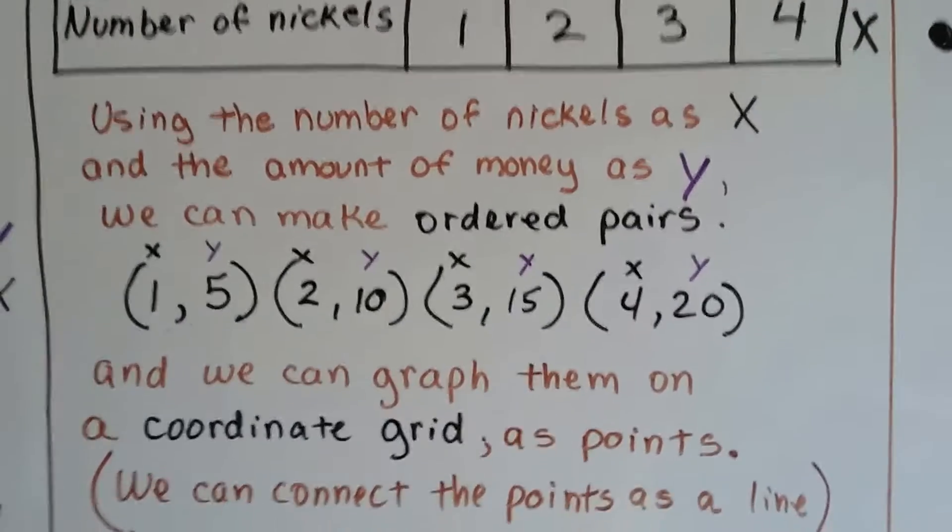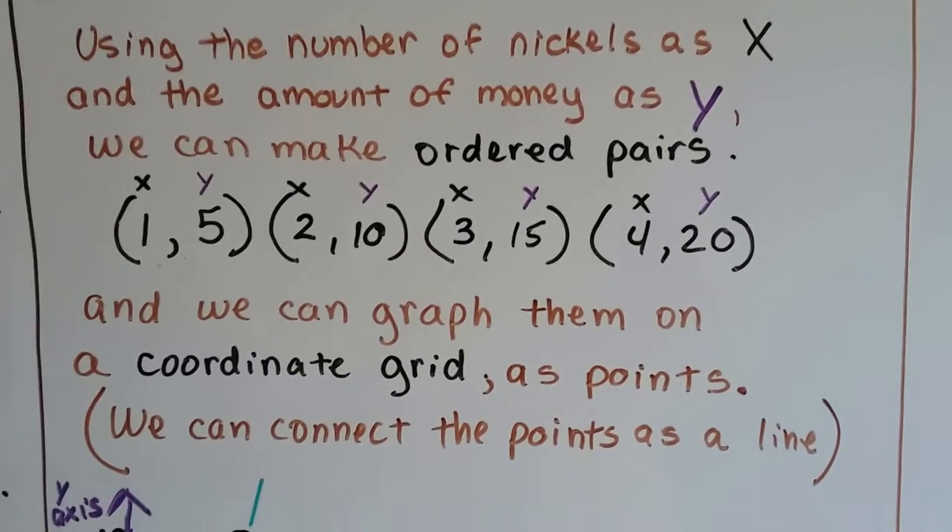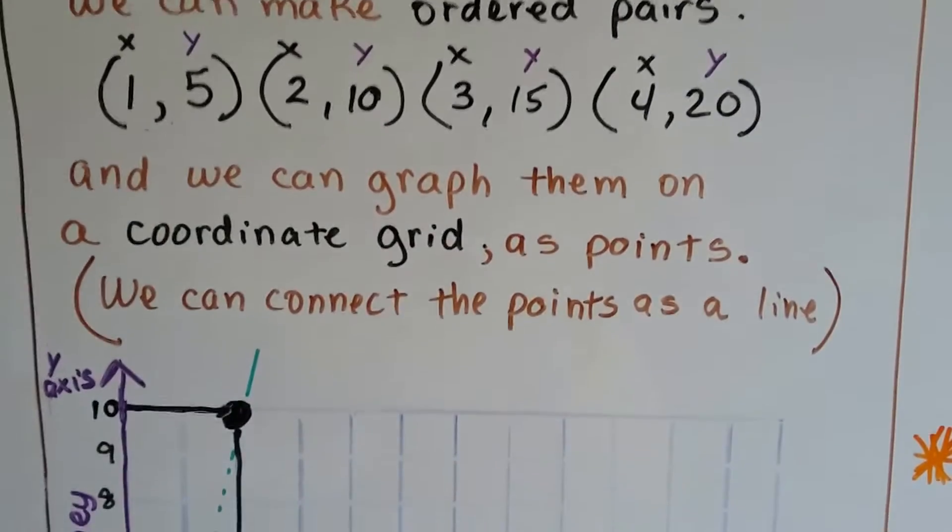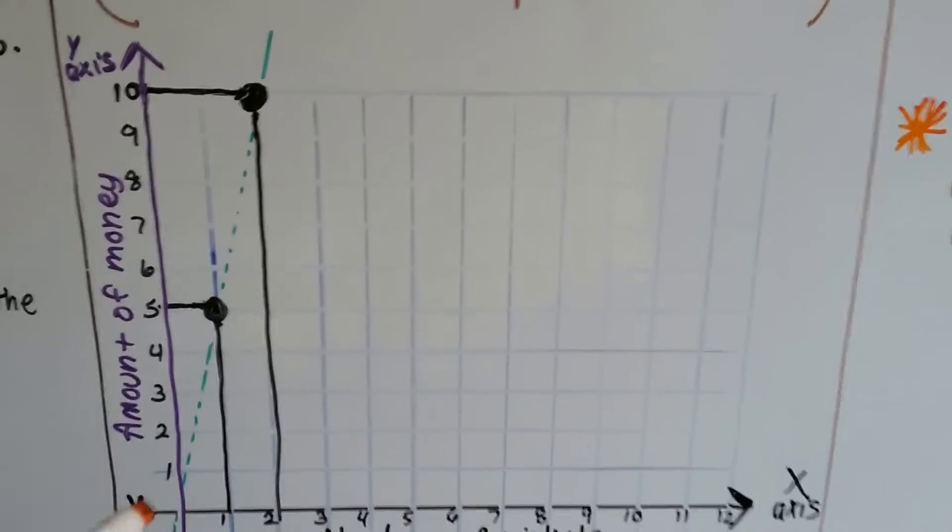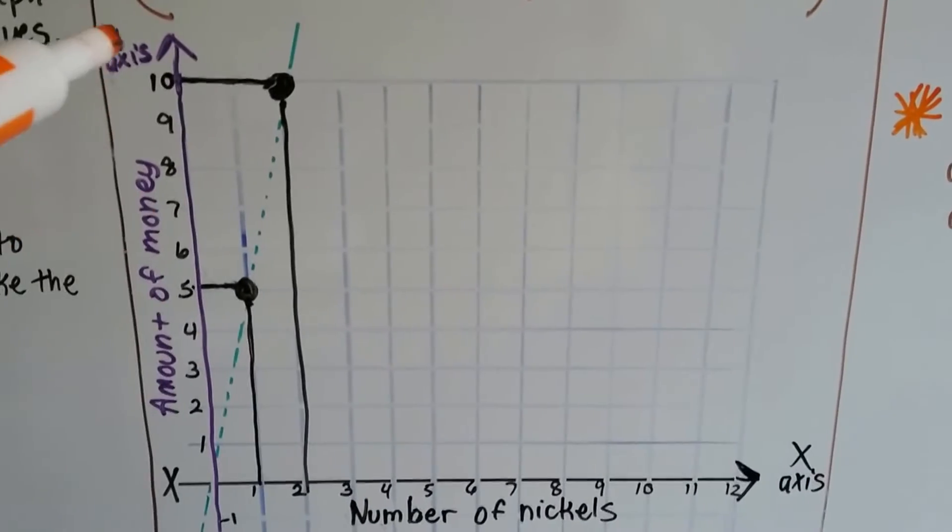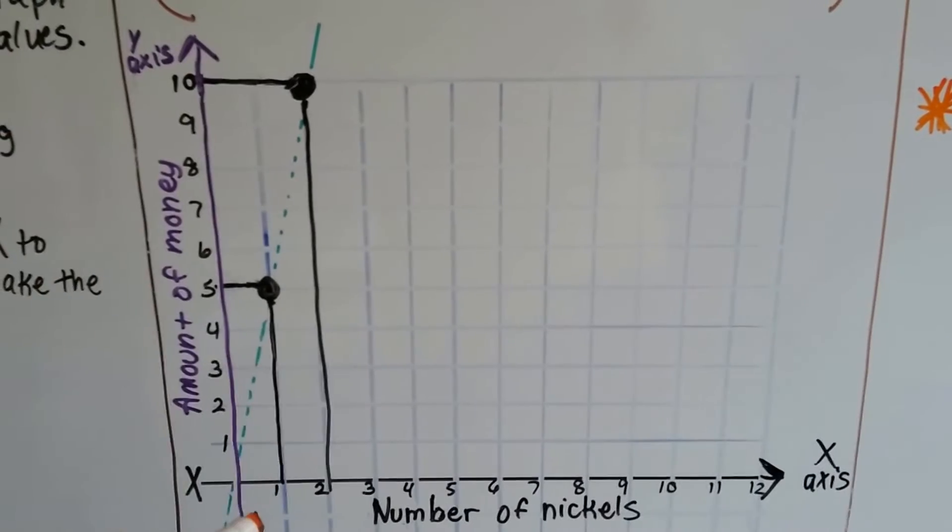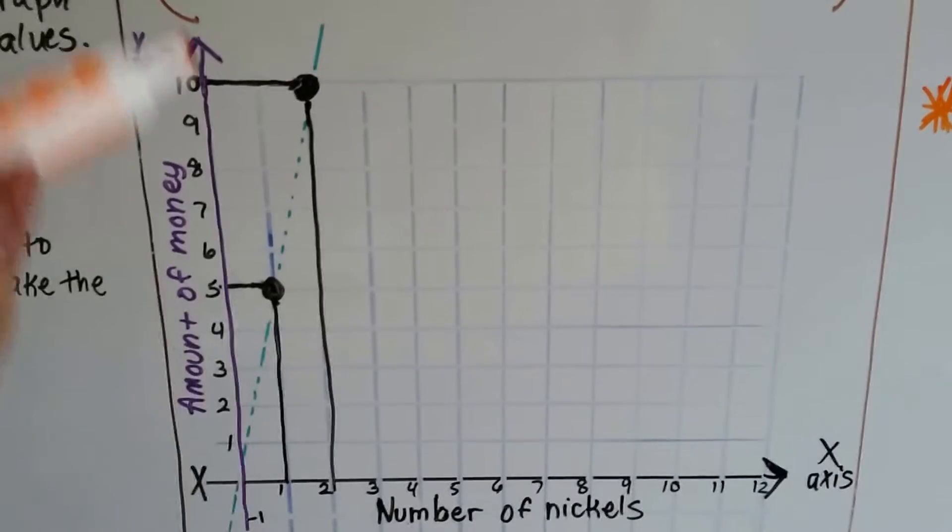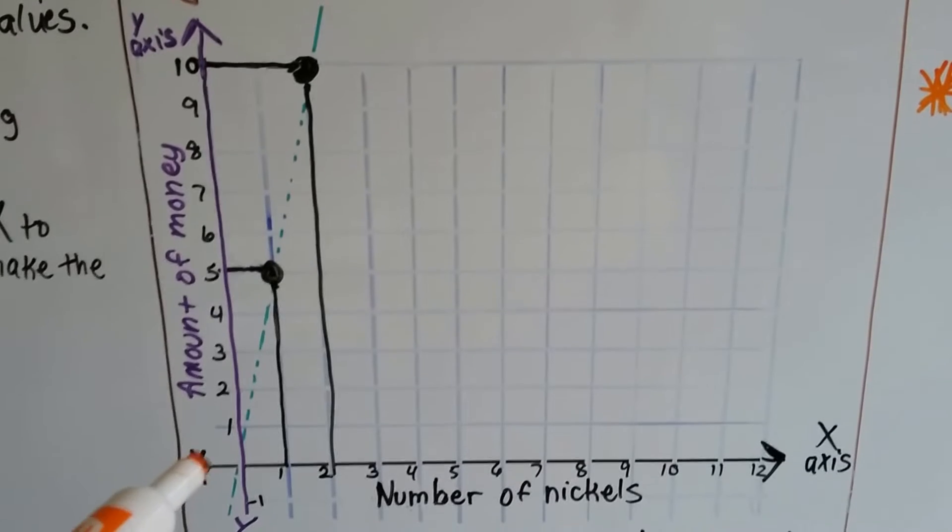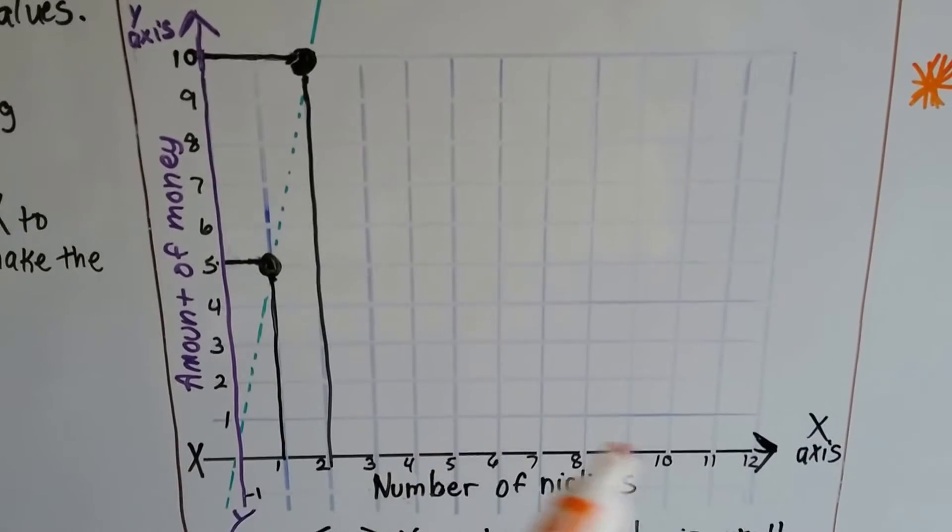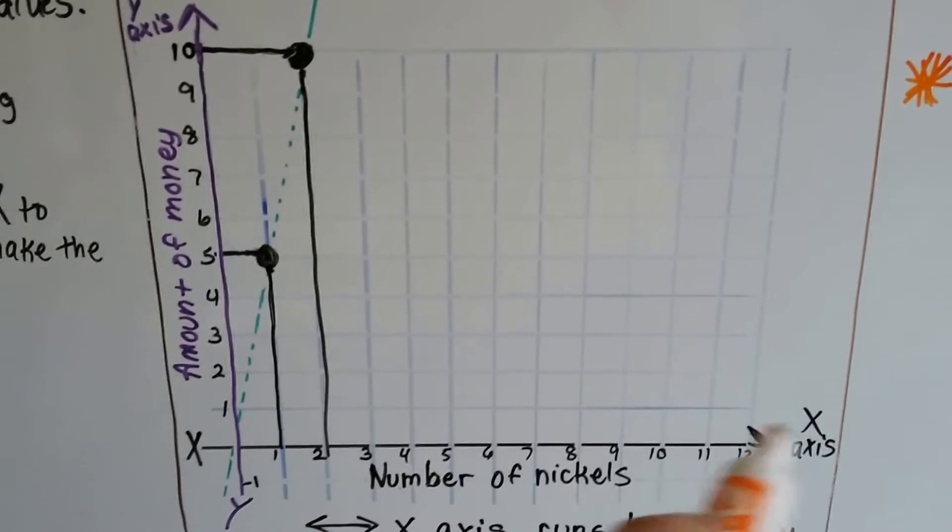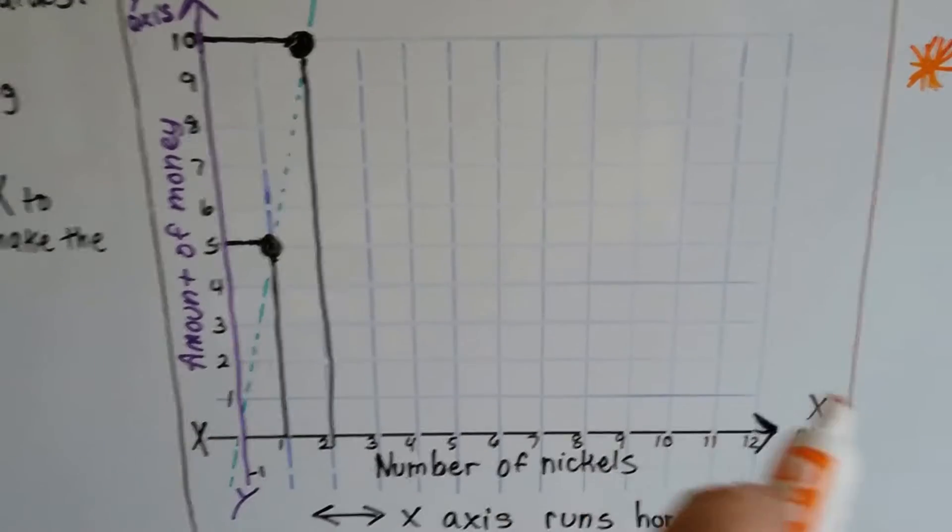And we can graph them on a coordinate grid as points. We can connect the points and even make a line. So here's a small grid, and it shows our y-axis. This is our y-number line showing our y values, and it's the amount of money we have. And it runs vertically. And then running horizontally across this way, like the horizon and the sunset, is the number of nickels. That's our x-axis.